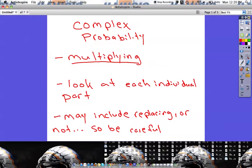With our complex probability, we're going to be taking what we did in simple probability and we're going to be putting in a step, and that step is going to be multiplication, and you are going to see that in a little bit here.